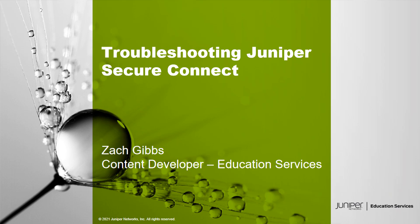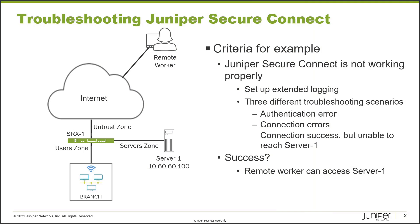Here is our example topology — you may recognize it from my other Juniper Secure Connect Learning Bytes. We have SRX1 connected to the users zone, the servers zone, and the untrust zone. The users zone has typical branch users and the servers zone has SRX1. Take special note of SRX1's IP address: 10.60.60.100 — that'll be very important today. The remote worker connects via the internet and needs to access SRX1 only, not anything else in the user zone.